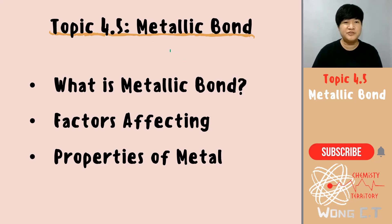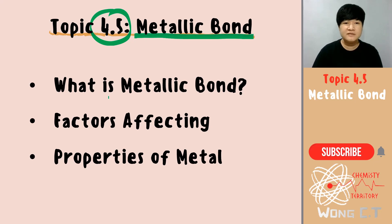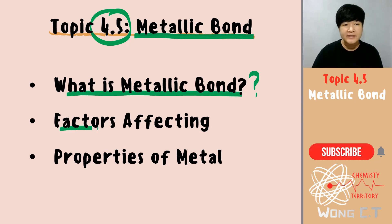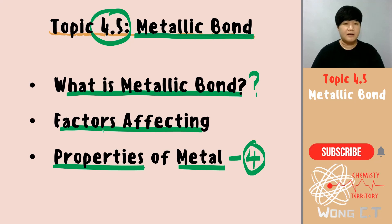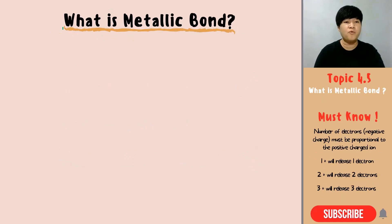Hi guys, welcome back to Wong Chemistry channel. For this video, the topic is 4.5, talking about metallic bond. In this video, we are going to look into what is actually metallic bond, what would be the factors affecting the metallic bond, how can metallic bond be stronger or weaker, and also what would be the properties of metal. We are going to discuss four different properties of metal in this video.